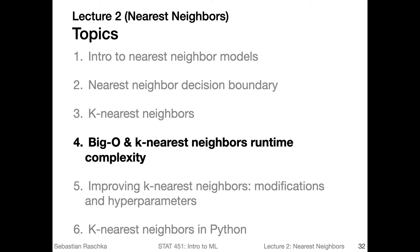Now it's about time to talk about Big O and k-nearest neighbors runtime complexity. Big O is a notation or a concept in computer science that is used to analyze the efficiency of algorithms. This usually refers to the runtime complexity in terms of execution speed, but also with a focus on how it behaves asymptotically. Sometimes Big O notation is also used to analyze memory efficiency.